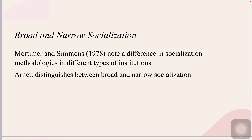An interesting, though seldom used, distinction in types of socialization was posed by Arnett. Arnett distinguished between broad and narrow socialization. Broad socialization is intended to promote independence, individualism, and self-expression. It is dubbed broad because this type of socialization has the potential of resulting in a broad range of outcomes. Narrow socialization, on the other hand, intends to promote obedience and conformity. It is dubbed narrow because there is a narrow range of outcomes.